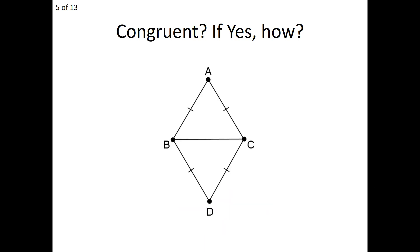How about these two triangles, triangle ABC and triangle BDC? Note that they have a common side, and common sides always mean equal sides. So AB and AC, and BD and CD, are given to us as equal. Can we prove these two triangles congruent? Yes, and the reason why is again side-side-side congruence.